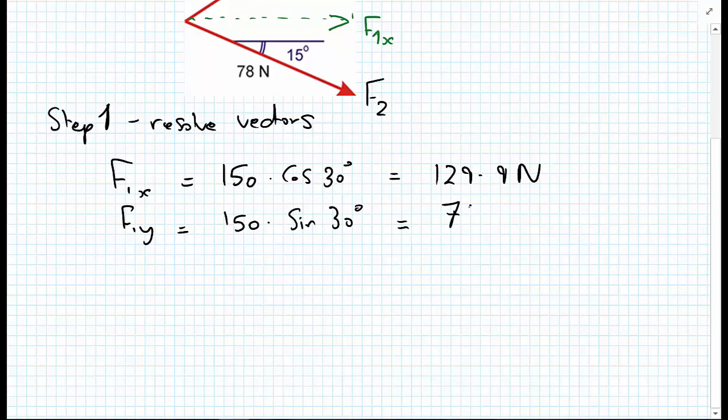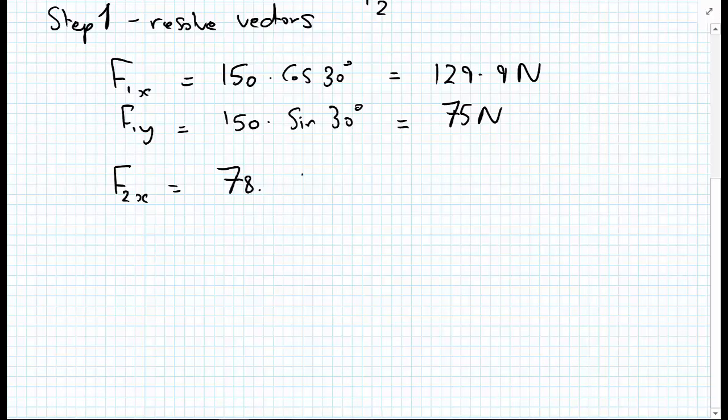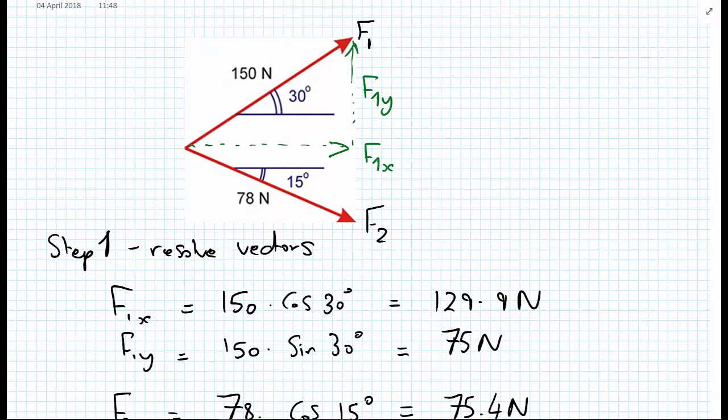And quickly for F2, F2x equals 78 multiplied by the cosine of 15 degrees, which equals 75.4 newtons. And F2y equals minus 78 sine of 15 degrees, which equals minus 20.2 newtons. And the minus sign here, because the Y component of this vector is pointing downwards.